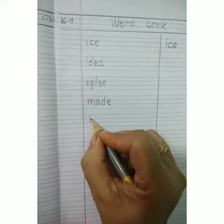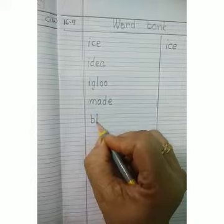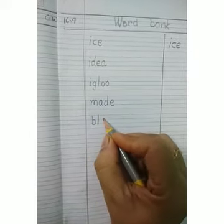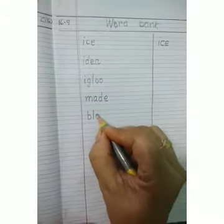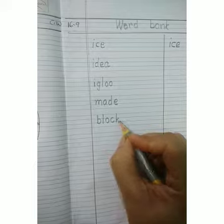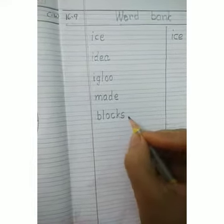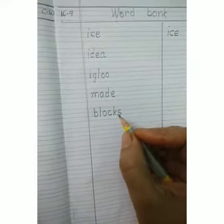Then write number five: B, L, O, C, K — block. Blocks.